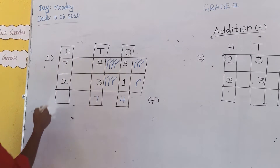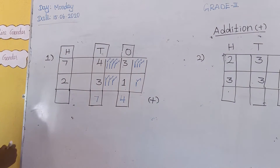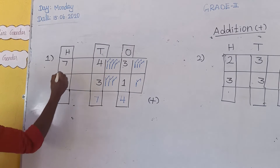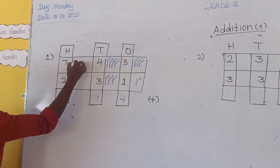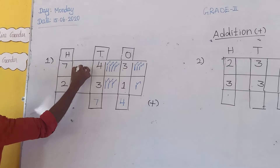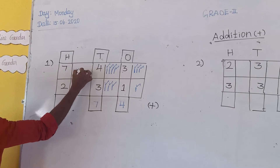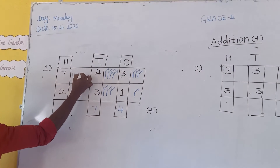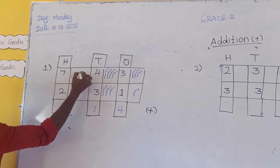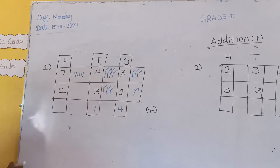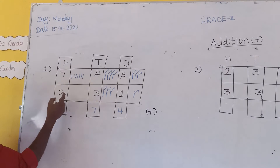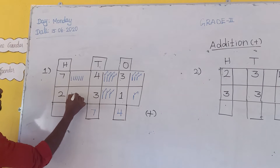Then next, the 100s value. 100s value: first number is 7, so draw 7 lines: 1, 2, 3, 4, 5, 6, 7. Next, second value is 2, so draw 2 lines: 1, 2.